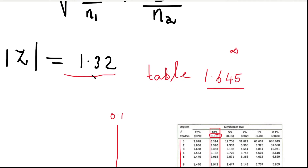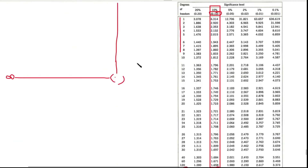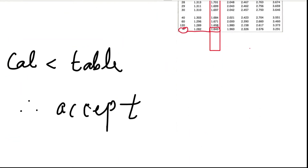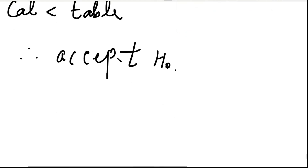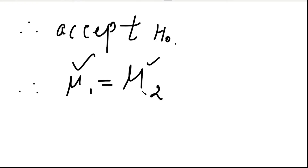Conclusion: if the calculated value of Z is less than the table value of Z, we accept H0. Here, calculated Z = 1.32 is less than table Z = 1.645, so we accept H0. Therefore mu1 = mu2, meaning the average heights of the two populations of students are equal.